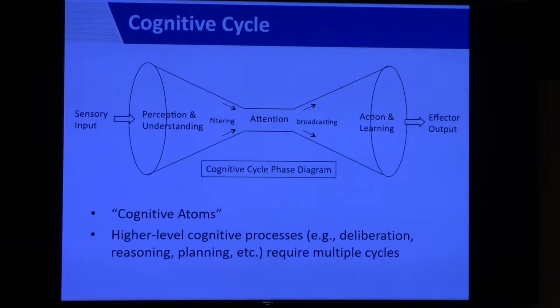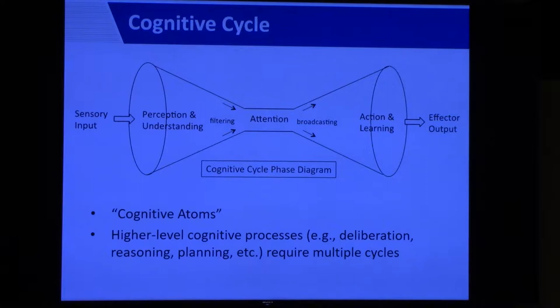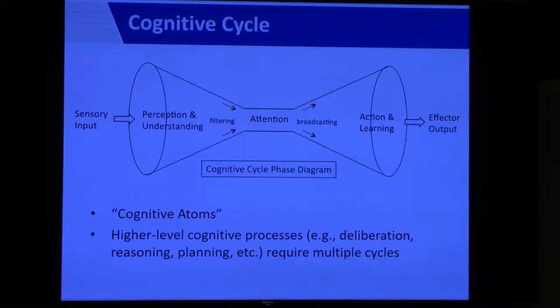The cognitive cycle can be considered a cognitive atom, and it's important to understand its cyclic nature — repeated perception and understanding followed by action phases, which can cascade and overlap. For higher-level cognitive processes like deliberation, reasoning, and planning, one cognitive cycle may not be enough, so multiple cognitive cycles may be needed. Understanding how multiple cycles coordinate to create higher-level cognitive processes is something we're actively working on.